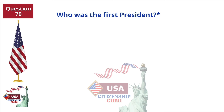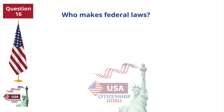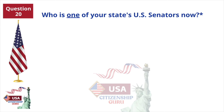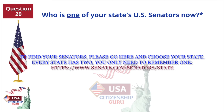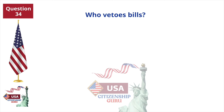Who was the first president? George Washington. Who makes federal laws? Congress. Who vetoes bills? The president.